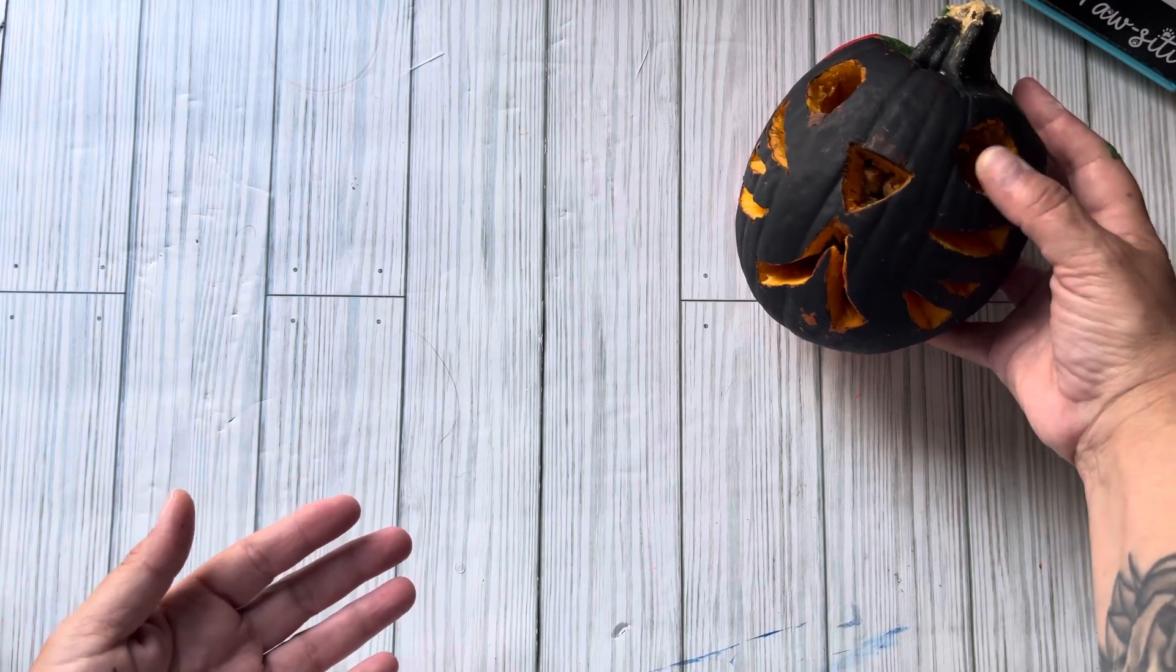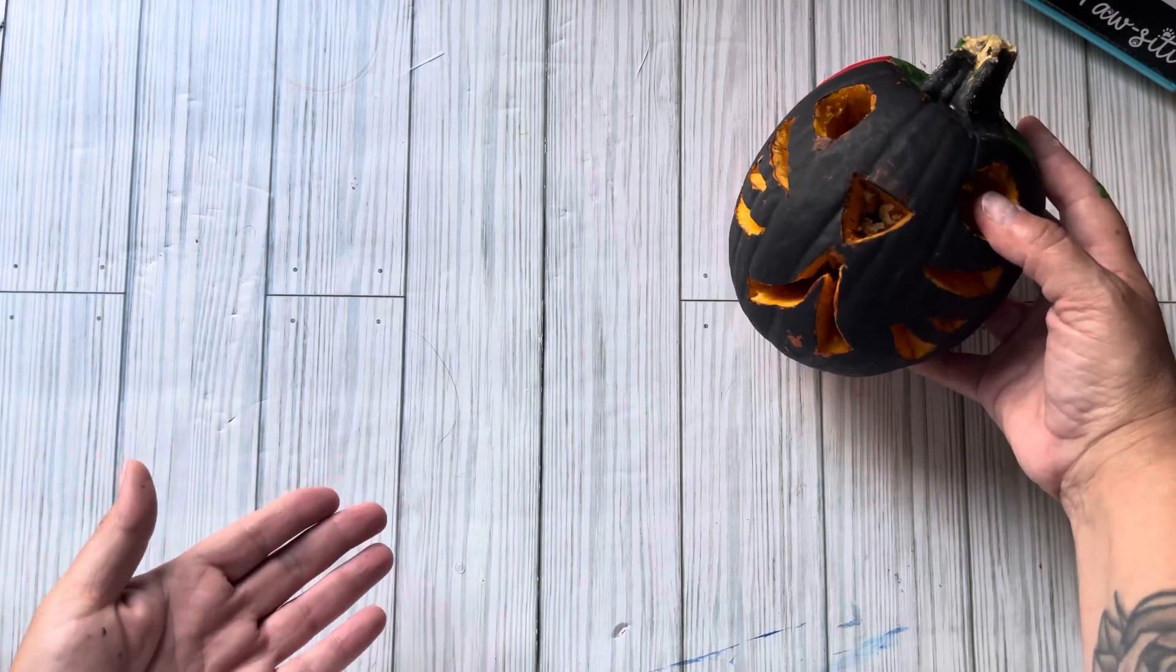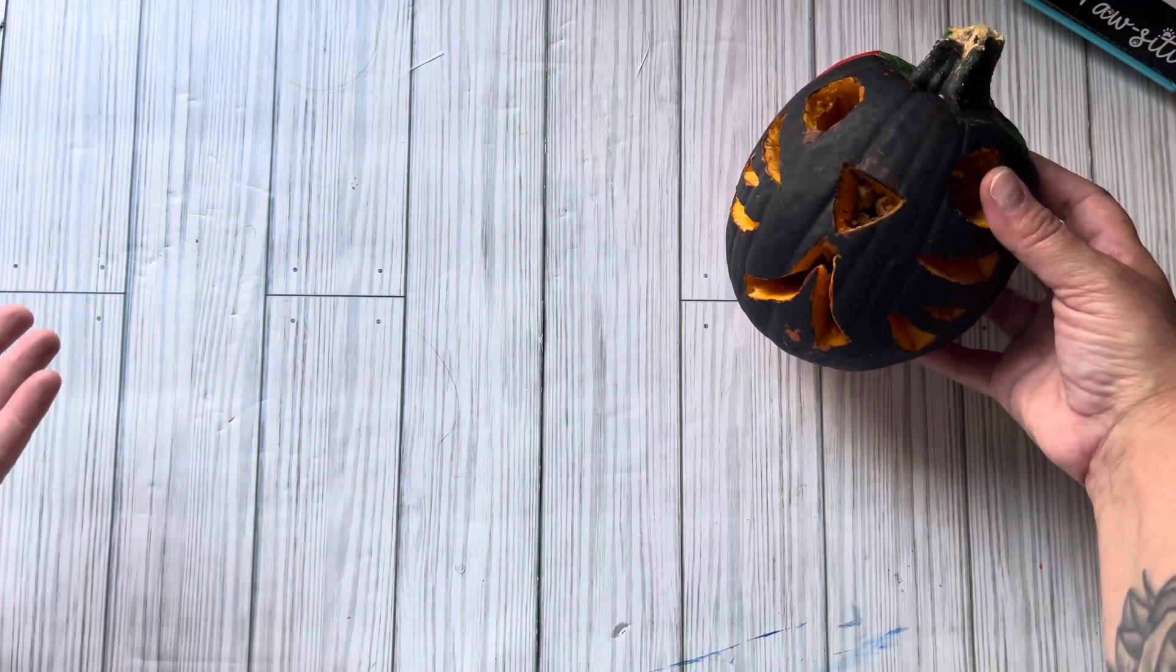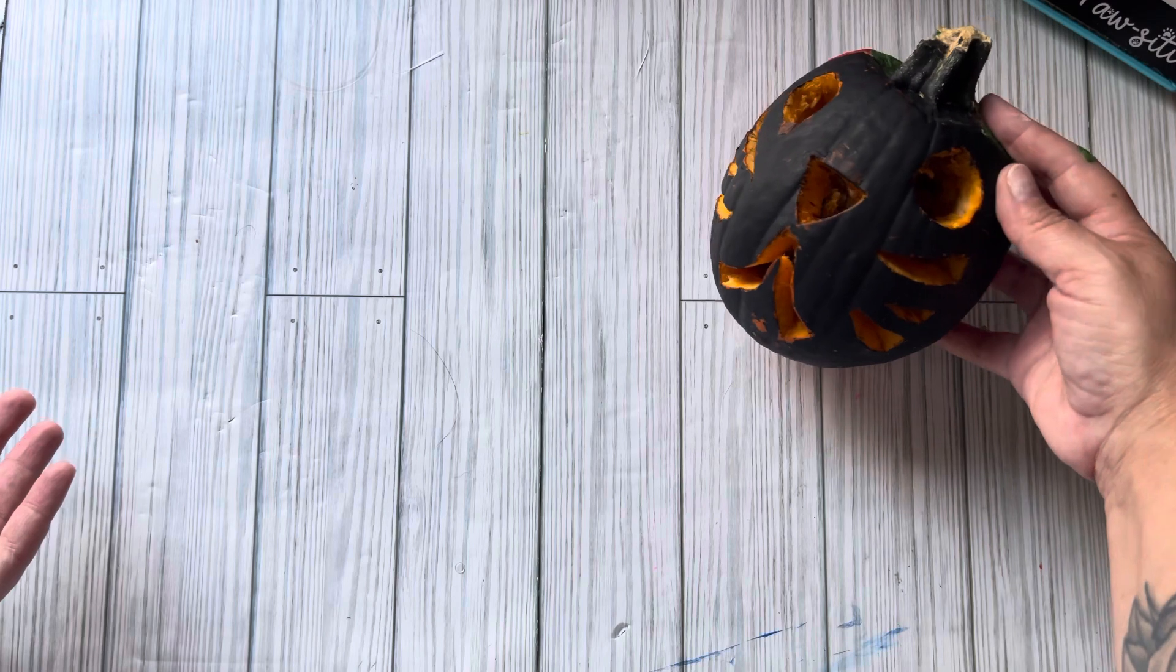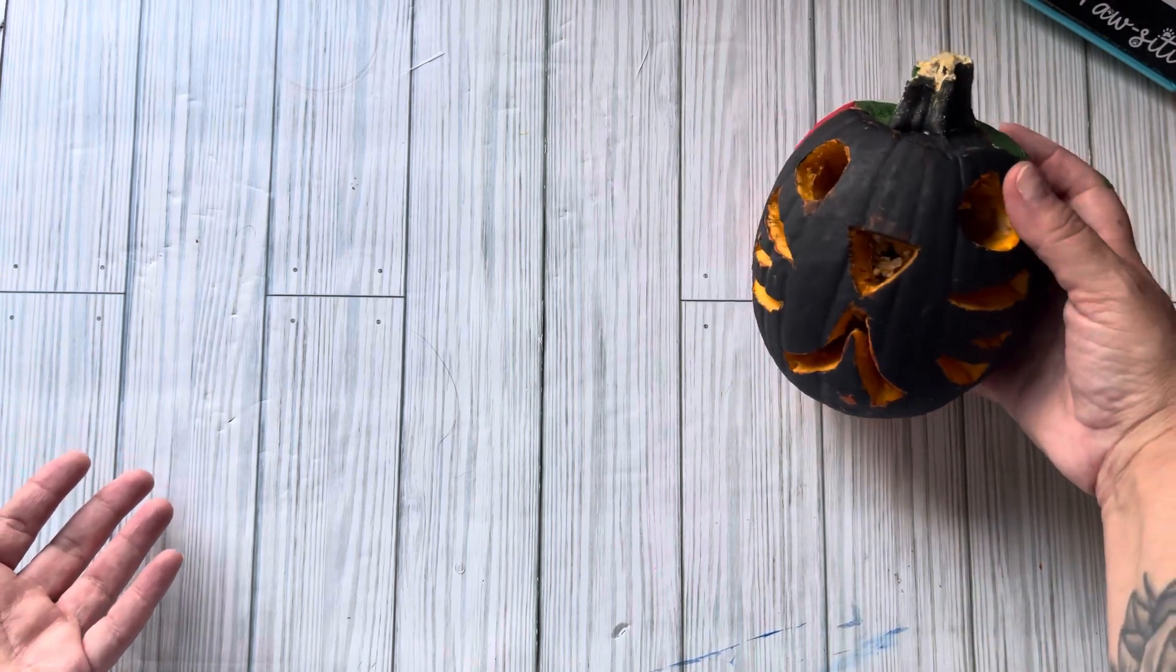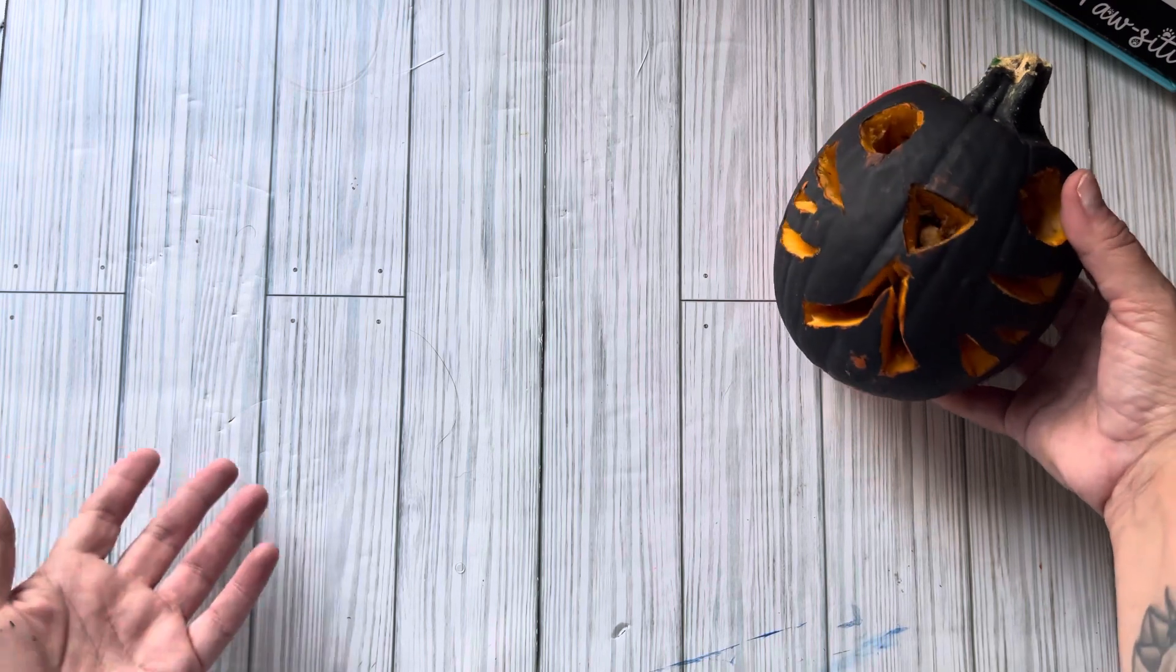My pumpkin was so small, it's called a pumpkin pie. I don't know if it's small enough because it's small enough to make a pie, I'm assuming. But Priscilla, this is my pumpkin. It's a cat. I tried to do my best, okay?